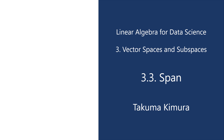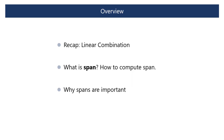Chapter 3, Section 3: Span. As we continue exploring linear algebra, understanding the concepts of linear combination and span is crucial for building a solid foundation. These concepts are fundamental for describing vector spaces and are used extensively in data science. In this section, we will recap the concept of linear combinations first and explore what spans are, how to compute them, and why they are important.